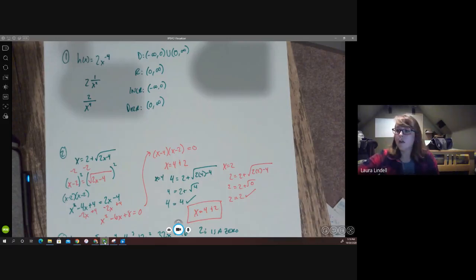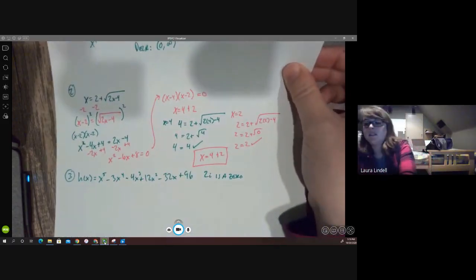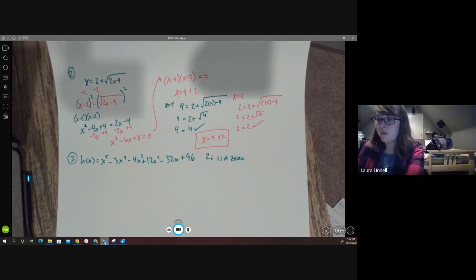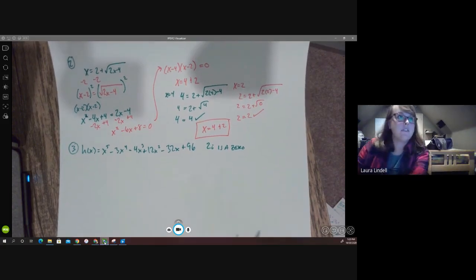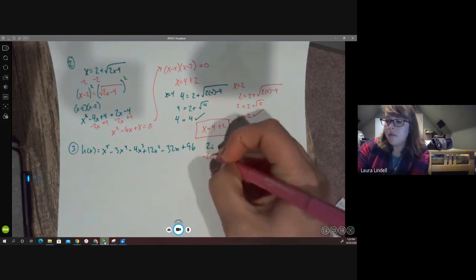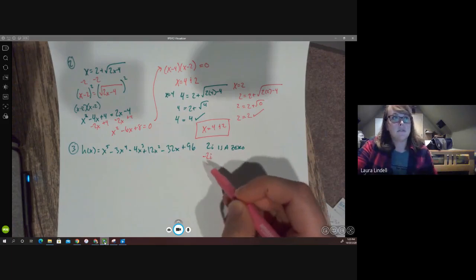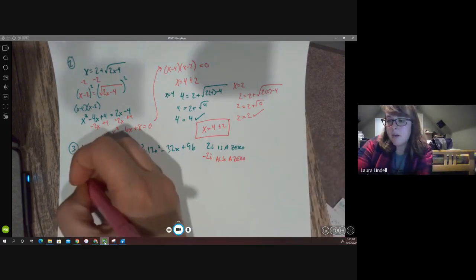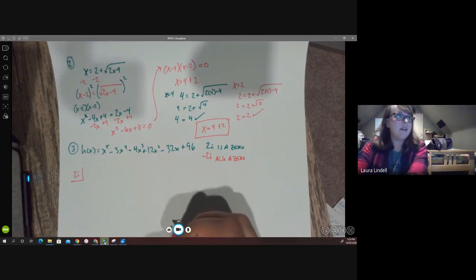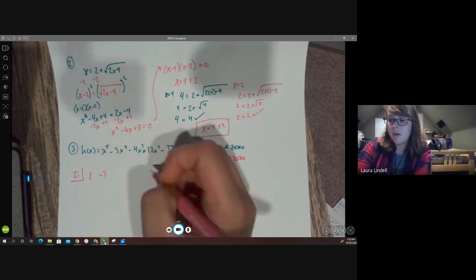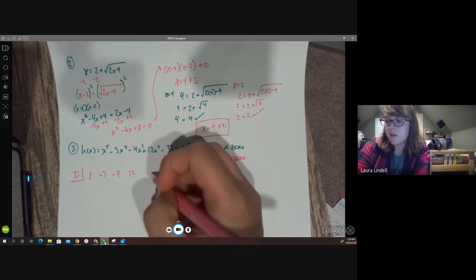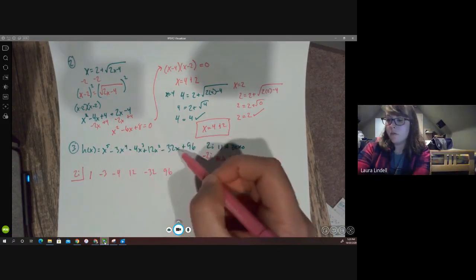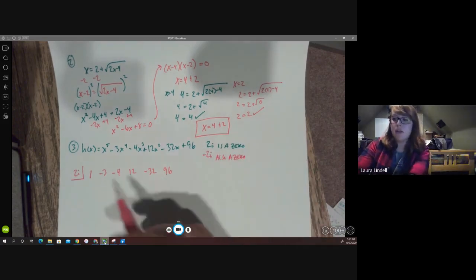We are told that this is h of x here. x to the fifth minus 3x to the fourth minus 4x to the third plus 12x squared minus 32x plus 96. And we are also told that 2i is a zero. This is where we have to do that synthetic division to divide out the 2i and the negative 2i, since we also know since 2i is a zero, negative 2i is also a zero. So I'm going to stick 2i in the box. It doesn't matter which one you put in first, 2i or negative 2i. And then I'm going to write my coefficients here. We have 1, negative 3, negative 4, 12, negative 32, and positive 96. And there's no gaps in here. We do have 5, 4, 3, 2, 1, and 0 powers of x. So we don't have to include any zeroes as placeholders or anything like that.